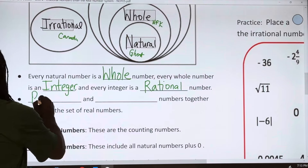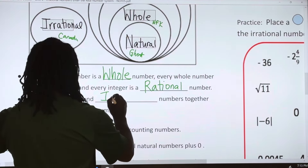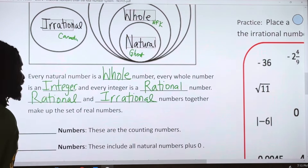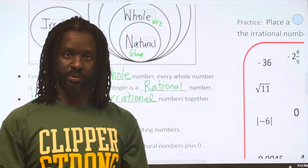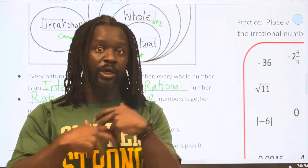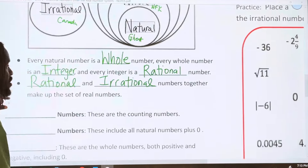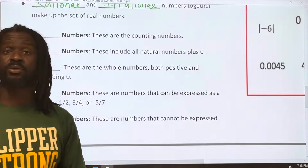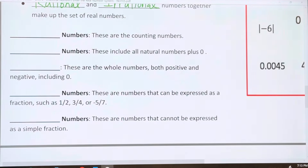Rational and irrational numbers together make up what is called the Real Number System. All of the numbers we're going to discuss this year are real. When you move on to high school, you'll be introduced to imaginary numbers — numbers that are not real.